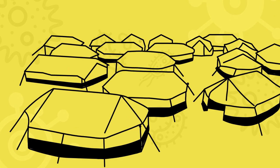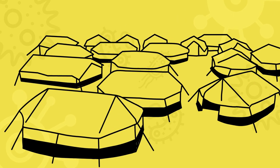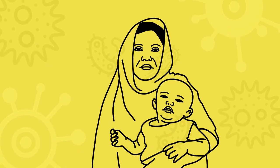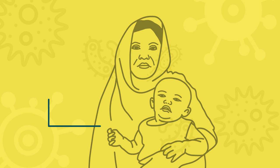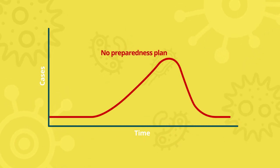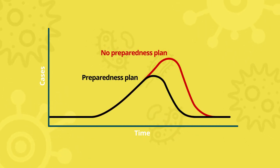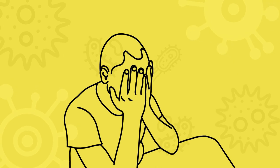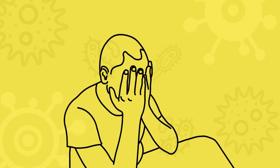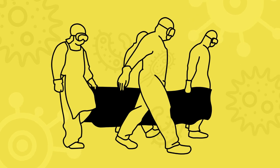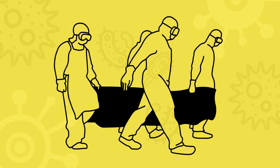Large-scale disease outbreaks such as diphtheria in the Rohingya refugee camps in Bangladesh, and recurrent epidemics such as cholera and Lassa fever, highlight the need for robust local and, if necessary, international preparedness and rapid responses to save lives. When an outbreak is undetected and a response is not triggered rapidly and effectively, the human cost can be high, as we saw in West Africa with Ebola.